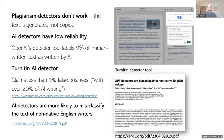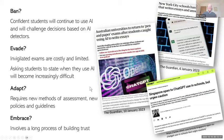What should we do? There are basically four responses institutions can make: they could ban them; evade by setting invigilated exams; adapt; or embrace. Each has issues. With banning, confident students will continue to use AI and challenge decisions based on AI detectors, which aren't foolproof. Going back to invigilated exams is costly and limited. Adapting requires new methods of assessment, new policies and guidelines — and that seems to be the main approach many UK universities are taking. A few institutions are embracing AI, but that involves a long process of building trust.